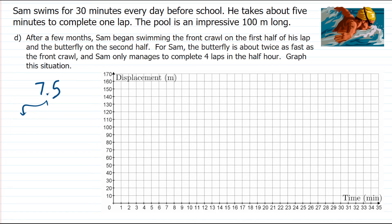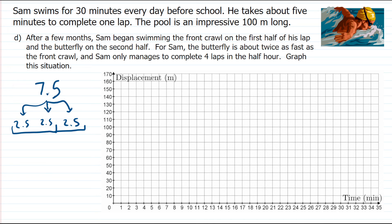To figure out the time split, divide the seven and a half minutes into three equal parts: two and a half minutes each. The front crawl takes two of those intervals (five minutes) going across, and the butterfly takes one interval (two and a half minutes) coming back. So in the 100-meter pool: five minutes doing the front crawl to the far end, and two and a half minutes back doing the butterfly, which produces a steeper line segment on the return.